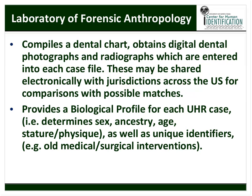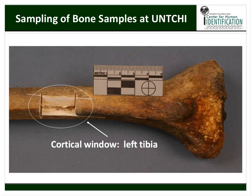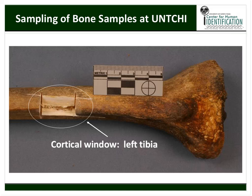All case-related paperwork is assembled and reviewed and entered into NamUs. As for our laboratory in Fort Worth, the Forensic Anthropology team does a phenomenal job selecting the most appropriate specimens for DNA analysis to give us the greatest likelihood of obtaining a DNA result so we can enter results into the National Missing Persons databases. Our goal is to maintain bones in as intact a fashion as possible, only taking small windows. The idea is to make identifications and return remains to families for proper burial.